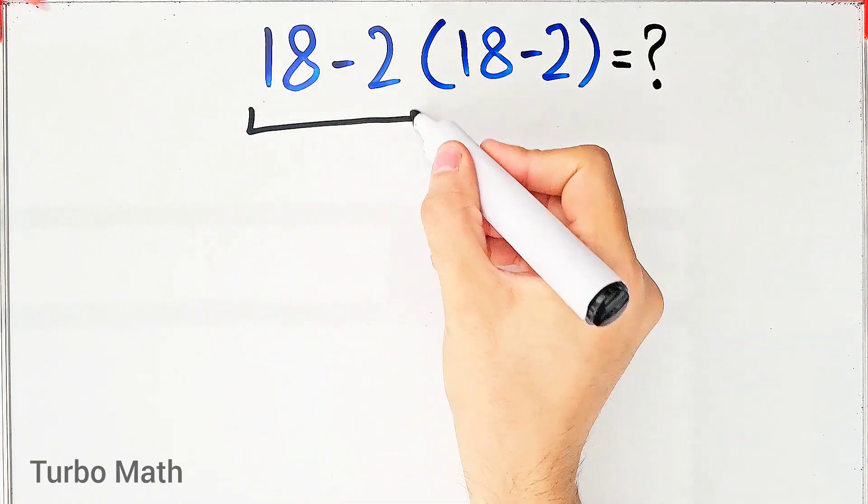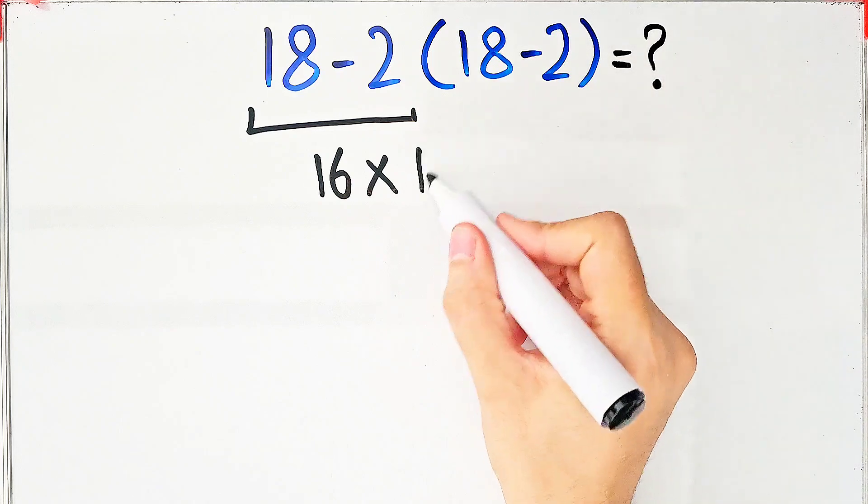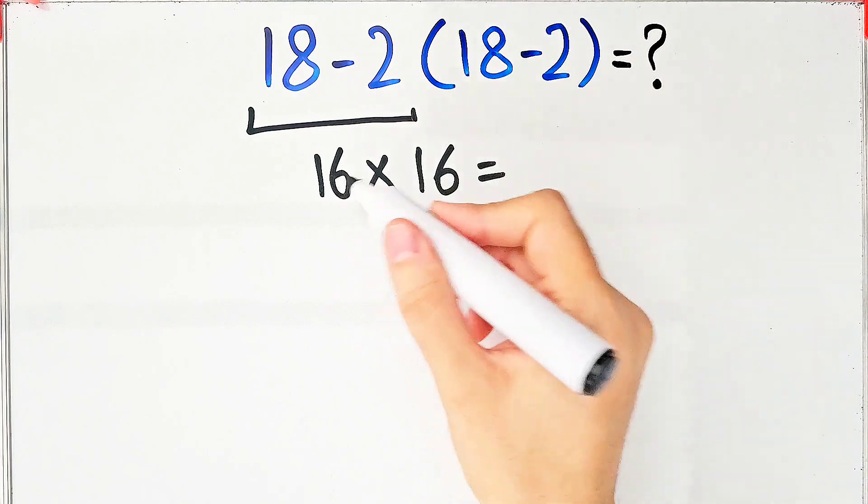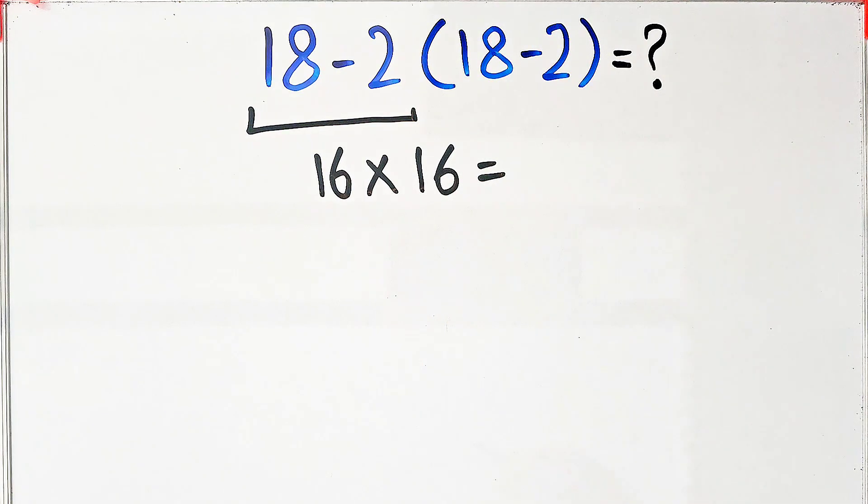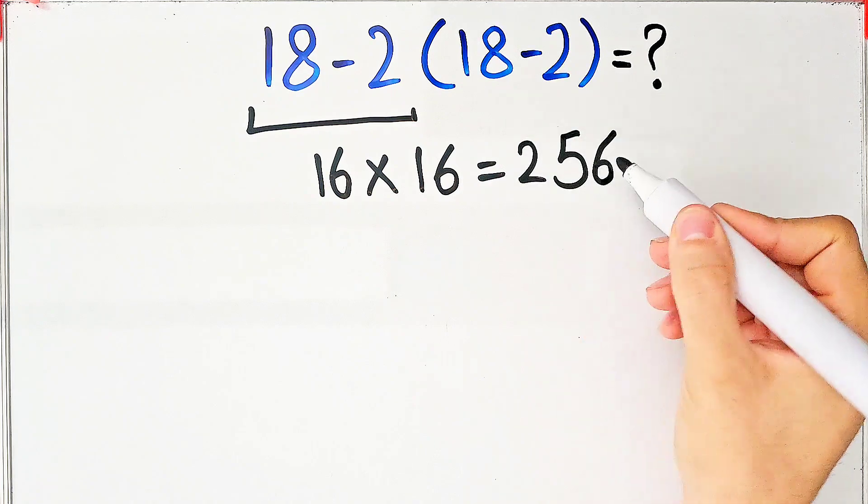18 minus 2 equals 16. 16 times 18 minus 2 which equals 16, and 16 times 16 equals 256. But this answer is definitely wrong.